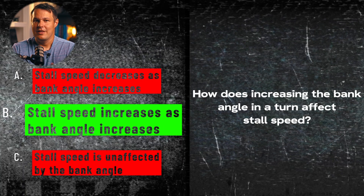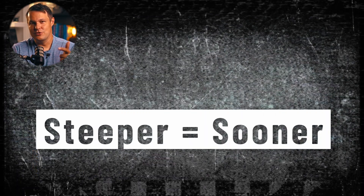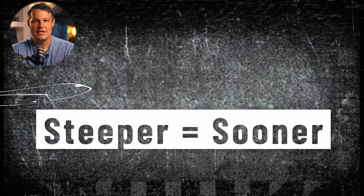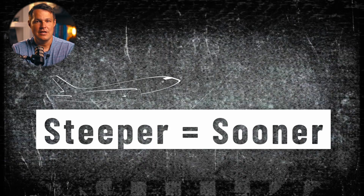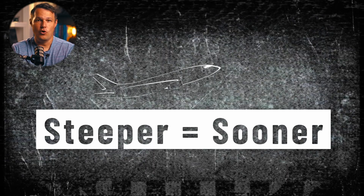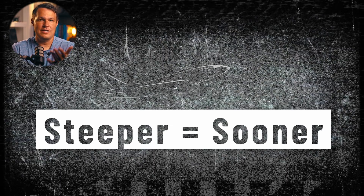To remember this: steeper equals sooner — S and S. The steeper you bank, the sooner you'll hit that stall speed because the wings are working overtime both to hold the turn and to keep the nose up.